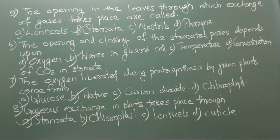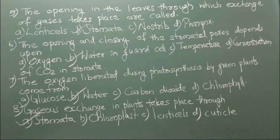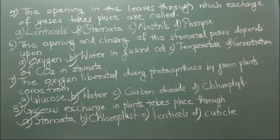Number 7: The oxygen liberated during photosynthesis by green plants comes from A. Glucose, B. Water, C. Carbon dioxide, D. Chlorophyll. The correct answer is option B, water. Number 8: Gas exchange in plants takes place through A. Stomata, B. Chloroplast, C. Lenticels, D. Cuticle. The correct answer is option A, stomata.